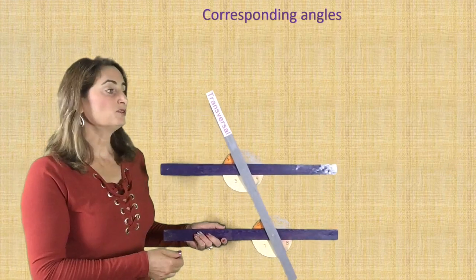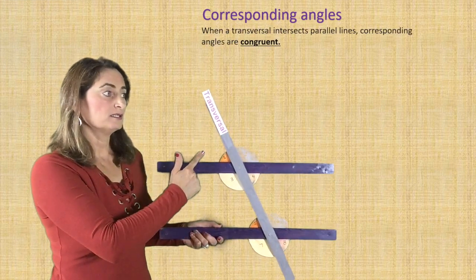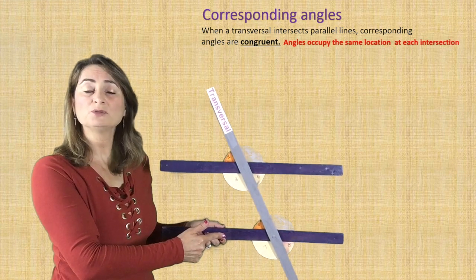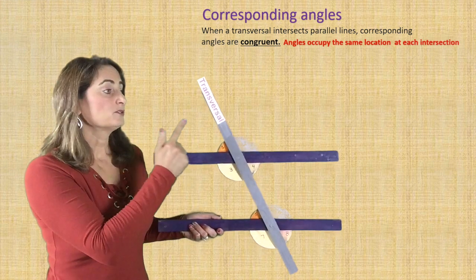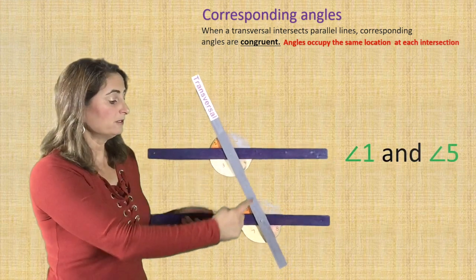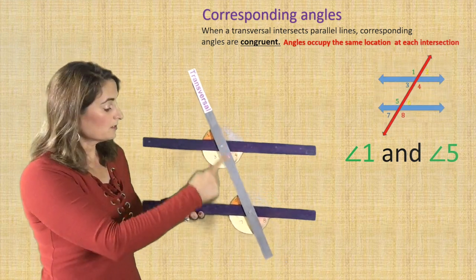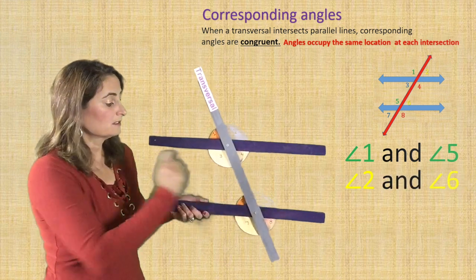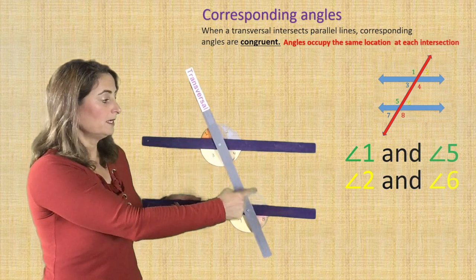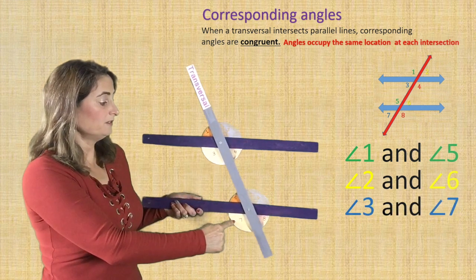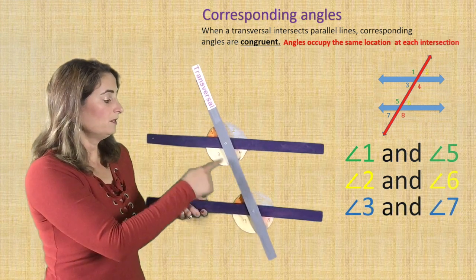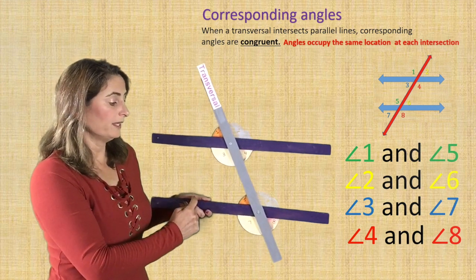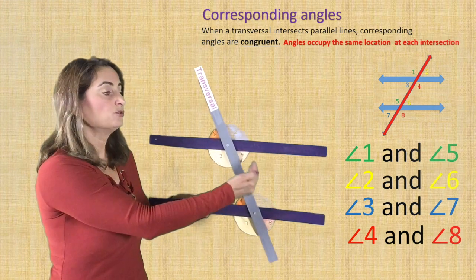The first one to discuss is corresponding angles. When a transversal intersects parallel lines, corresponding angles are congruent. And if you remember from last unit, corresponding means occupying the same location, but this time at each intersection. So look at the two parallel lines with angles one through eight. Angle one corresponds with angle five — they are both on top of the line to the left of the transversal. Numbers two and six are corresponding angles on top of the parallel lines to the right of the transversal. Numbers three and seven are corresponding angles and they are congruent — both on the bottom of the parallel line to the left of the transversal. Four and eight are congruent corresponding angles, both on the bottom of the two parallel lines to the right of the transversal.